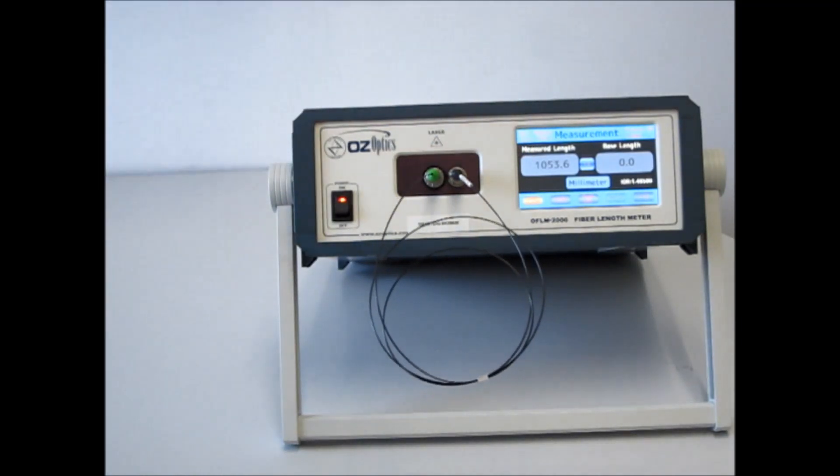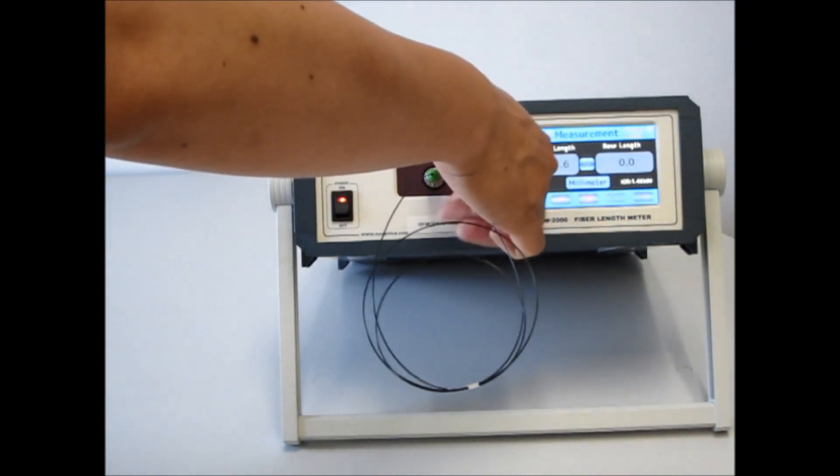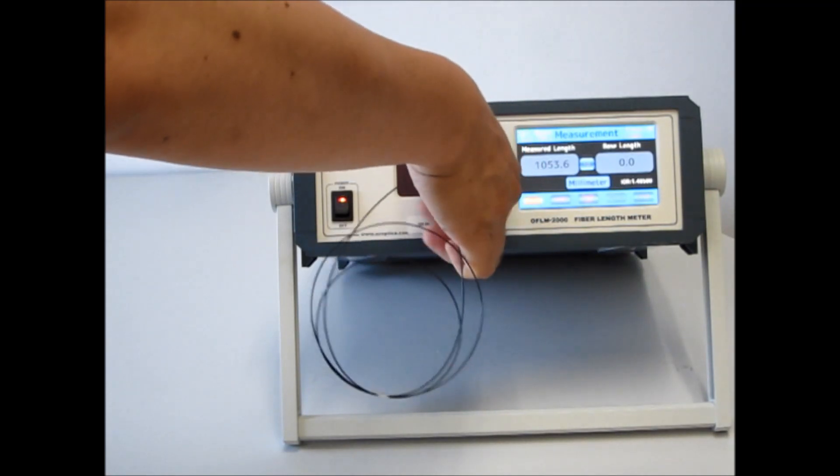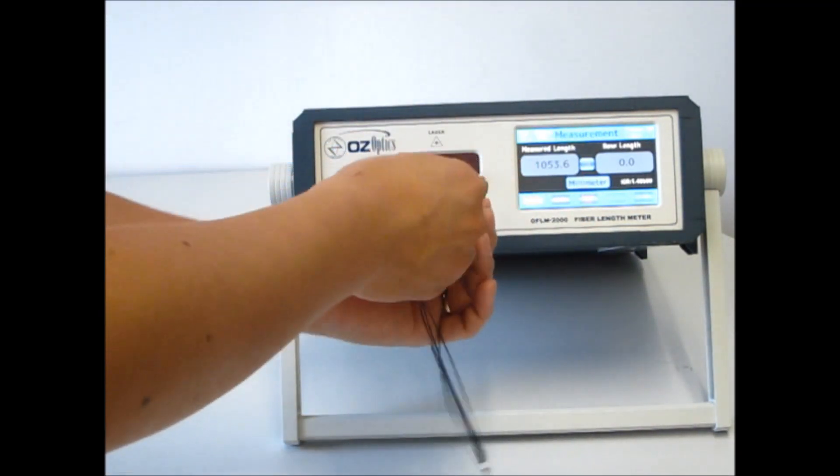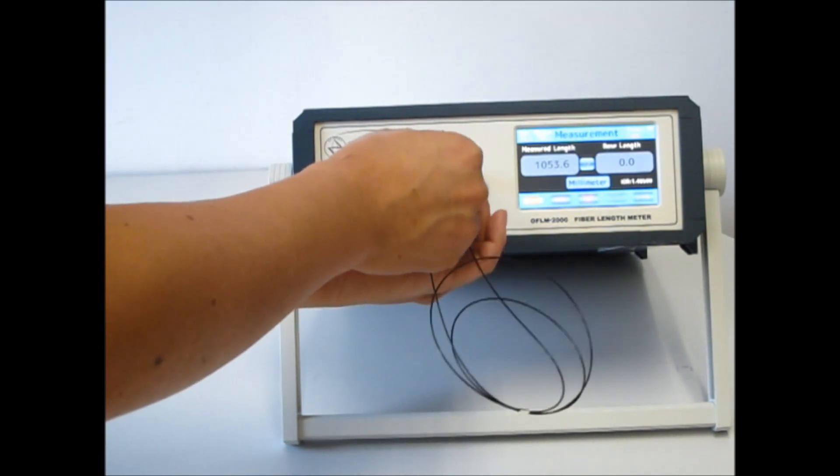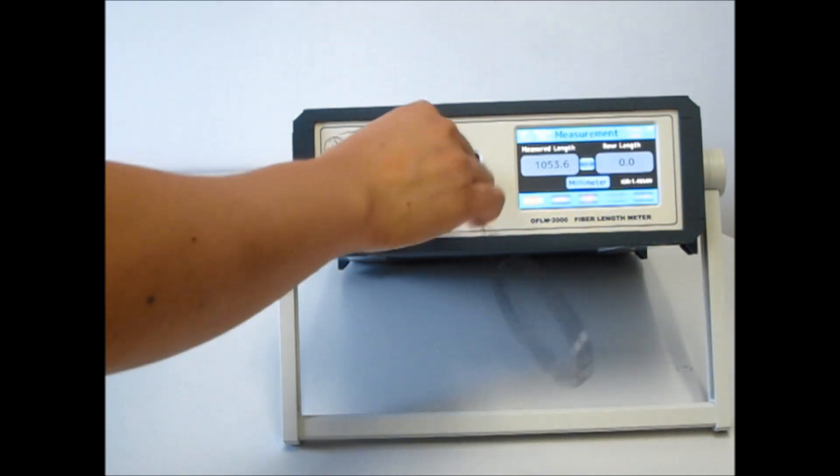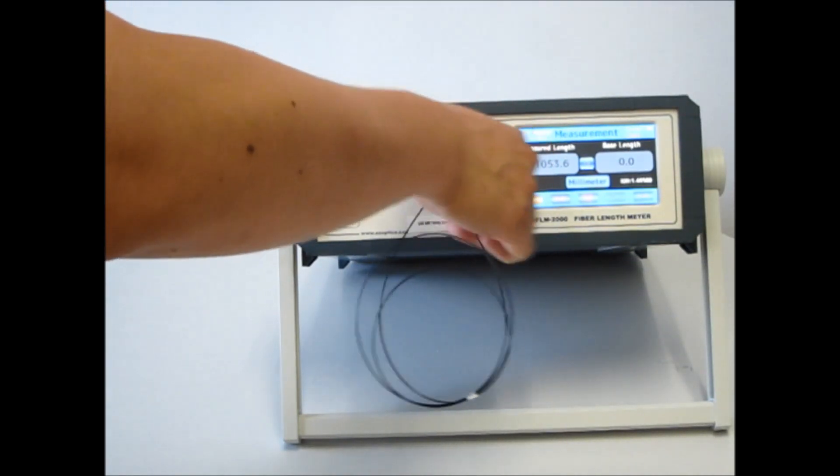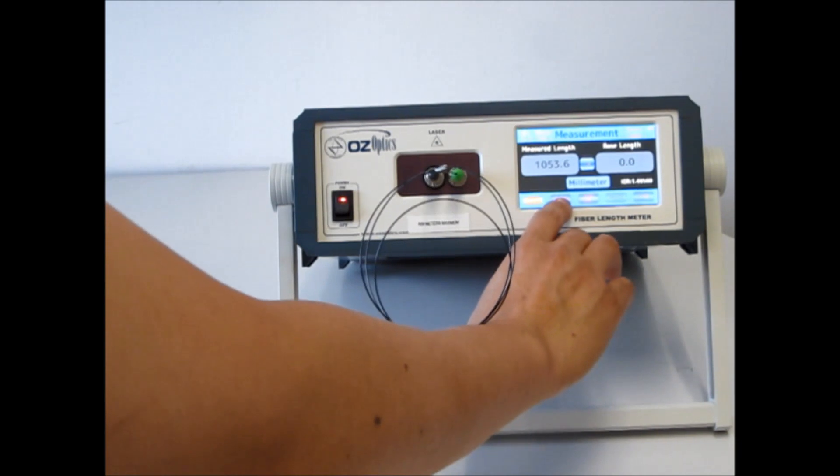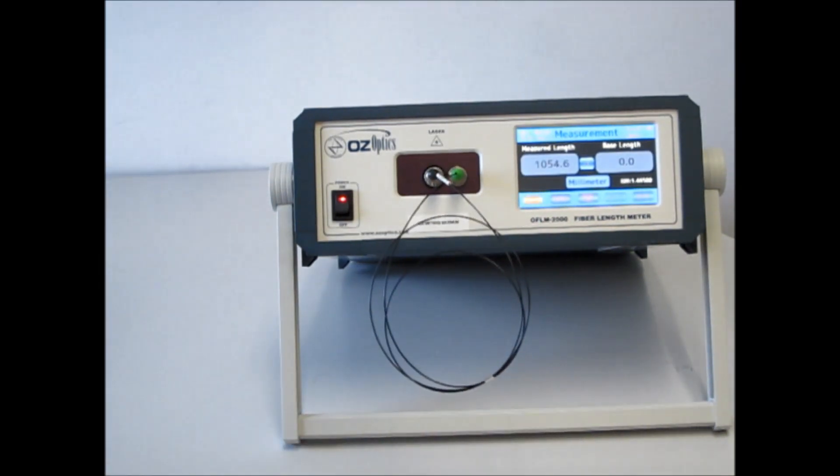Let's switch the ends to demonstrate the repeatability. You'll notice that the end with the green boot will be on the right, and the end with the black boot will be on the left. Tighten up the nuts and push the run button again. The measured length is 1,055 millimeters. The 1 millimeter difference is within measurement error.